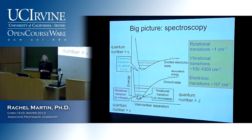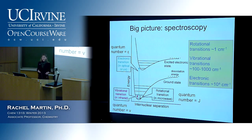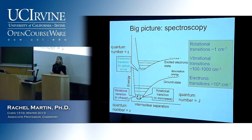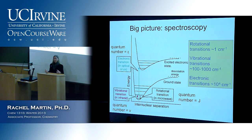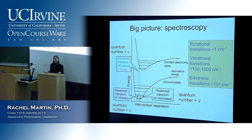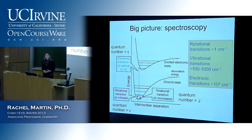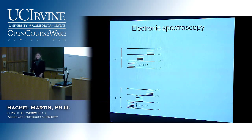It doesn't take very much energy to excite rotational states. With a little bit more energy we can excite vibrational states, and the difference in energy between those two is really large. Rotational transitions are about one wave number, and vibrational transitions are 100 to 1,000 times more. At room temperature there's lots of population in the rotational states, but most molecules are in the ground vibrational state and also mostly in the ground electronic state. Now we're going to look at what happens if we put in a lot of energy and excite the electronic states.